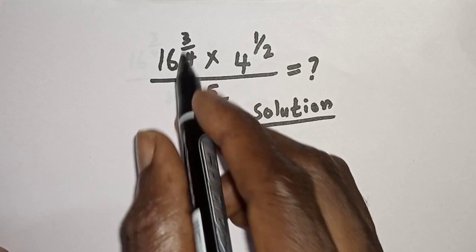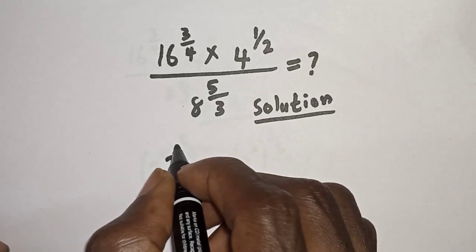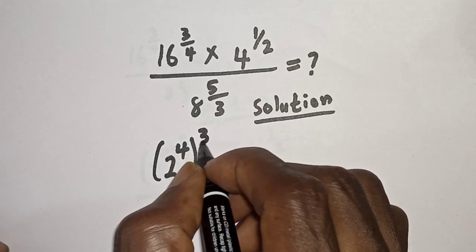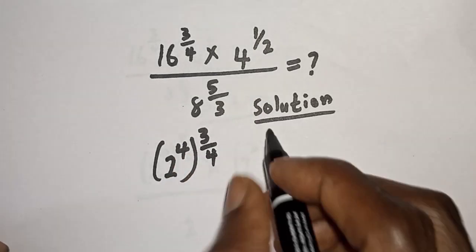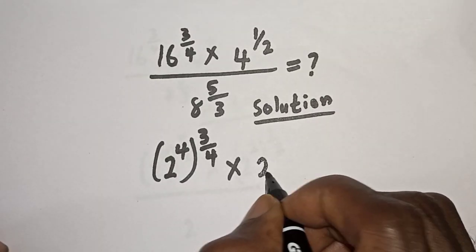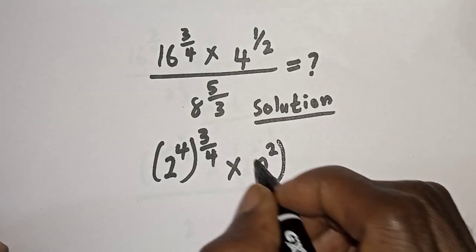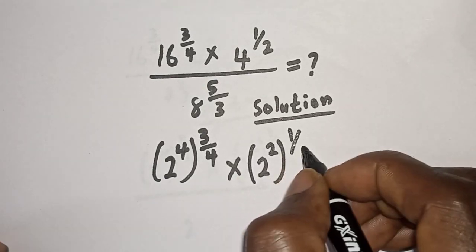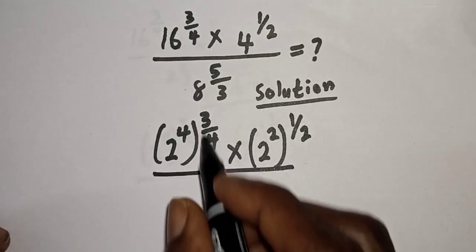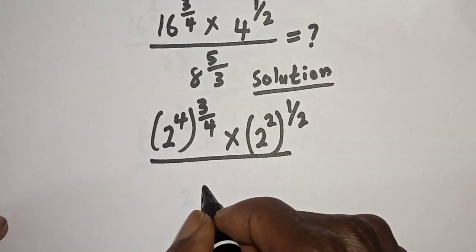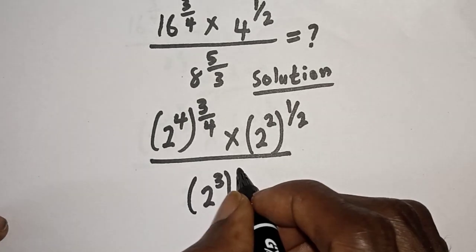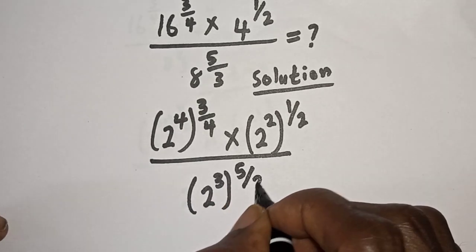16 raised to power 3 over 4 can be written as 2 raised to power 4, to the power of 3 over 4. Multiplied by 4 raised to power 1 over 2, which can be written as 2 raised to power 2, to the power of 1 over 2. Divided by 8 raised to power 5 over 3, written as 2 raised to power 3, to the power of 5 over 3.